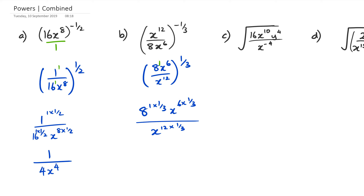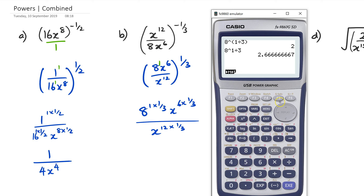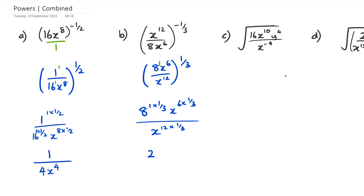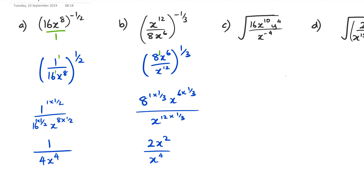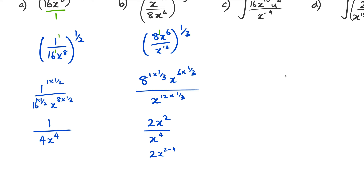Now, 8 to the power of 1 times 1 over 3 is just 8 to the power of a third. If you're not good with those numbers, you can go to your calculator. Make sure you put brackets around the 1 third, because otherwise you'll get the wrong answer — 2.67 is not correct. The correct answer is 2. So 8 to the power of 1 third is 2. Then x to the power of 6 times a third is squared, divided by x to the power of 12 times a third which is 4. We've got x squared and x to the power of 4, so this can be written as 2 times x to the power of 2 minus 4.